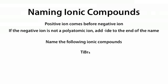Next we have TiBr4. Since Ti, or titanium, is a transition metal, it can form multiple ions: Ti2+, Ti3+, and Ti4+. Which one is it in this case? Since we are forming this with Br-, and we have four of them, it has to be Ti4+. 4+ plus 4- equals zero, which is the overall charge on TiBr4.